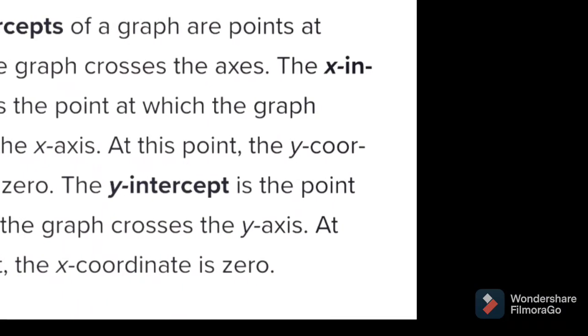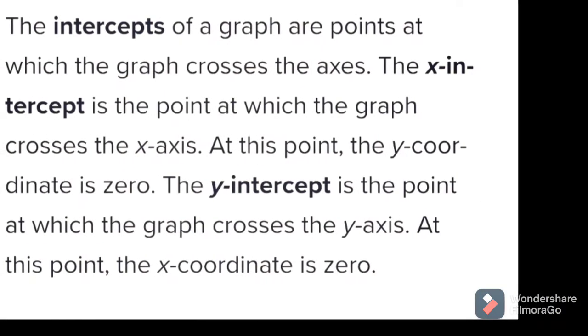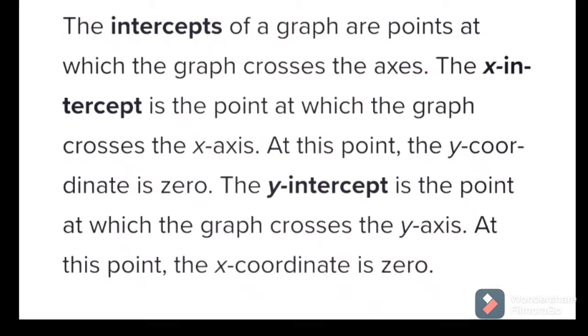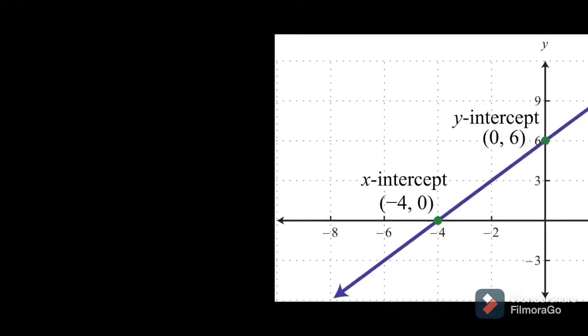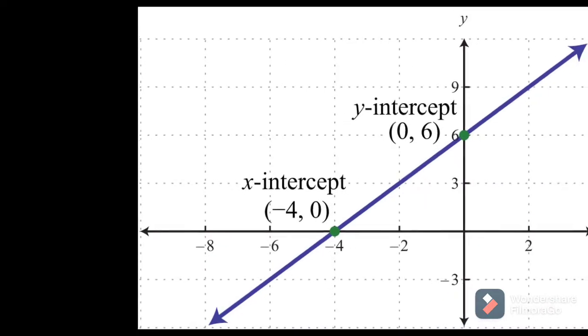So first we start from x-intercept and y-intercept. The x-intercept is the point at which the graph crosses x-axis and at this point the y-coordinate is always 0. Similarly at y-intercept the x-axis is 0. So you can also check this example.